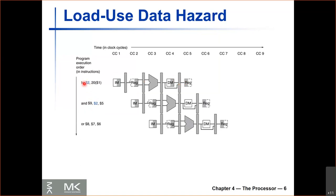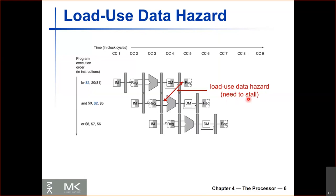If this was an ADD instruction, the value would be available at the end of the execute stage and we could forward it to the beginning of the execute stage of the next instruction. But because of the load instruction, the value is not available until the end of the data memory stage. Because of that, we cannot forward — the value is available at the beginning of cycle five, but it is needed by the next instruction at the beginning of cycle four, and we can't forward back in time. So whenever we have a load-use data hazard, we need to stall.